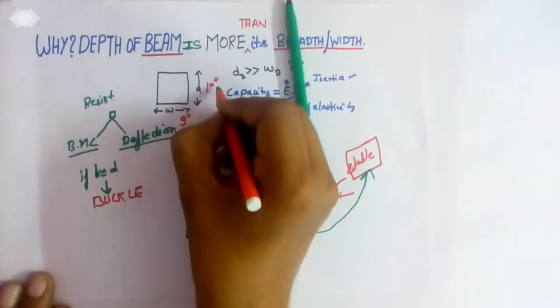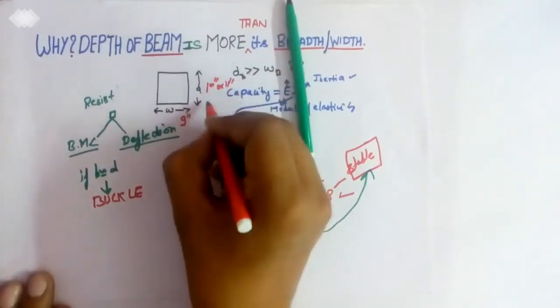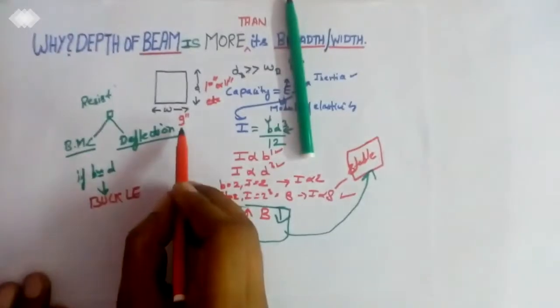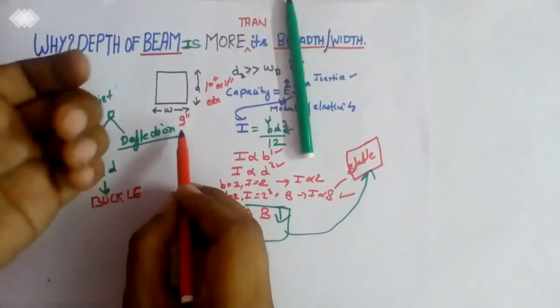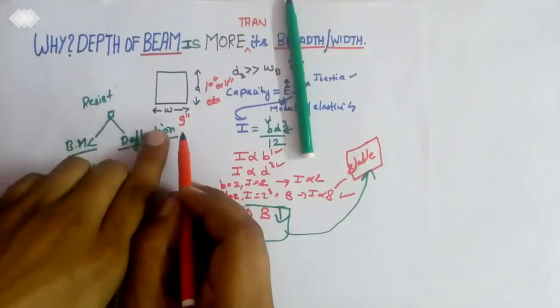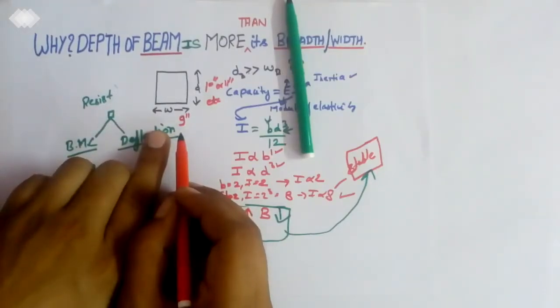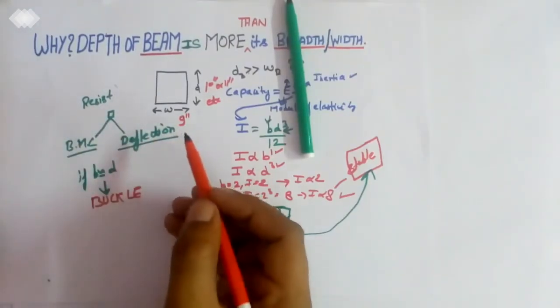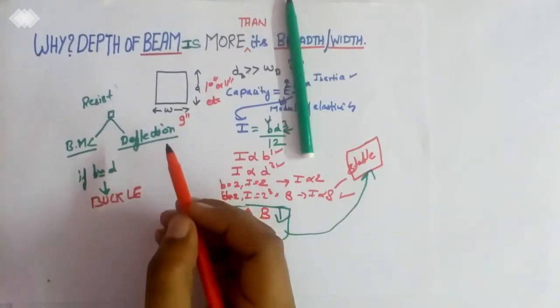If we are taking a 9 inch width, we have to take 10 inch, 11 inch, or something that should be a little greater, or you can take larger depth than the width dimension. So this is the concept why the depth of the beam is more than its breadth or width.